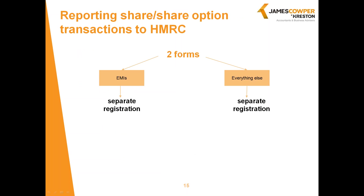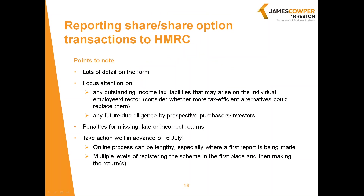If you've only got EMIs there'll only be one form to complete, but if you've got EMIs and anything else you will need to do two forms — one for EMIs and one for everything else, each with separate registrations. If you haven't started to register, you should do so as soon as possible. The key point is that even if you're not doing anything that has a value, if you're doing something you probably still need to note it on the form.